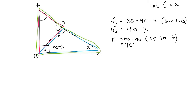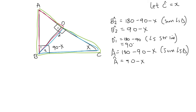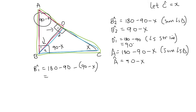Now I'm going to work out angle A by looking at the big green triangle. Angle A is equal to 180 minus 90 minus X, because of the sum of angles in a triangle, so angle A equals 90 minus X. Lastly, angle B1: working in the pink triangle using angles in a triangle, B1 equals 180 minus 90 minus angle A, which gives us angle B1 equal to X. That's step one complete — we have now found all of the angles in the diagram.